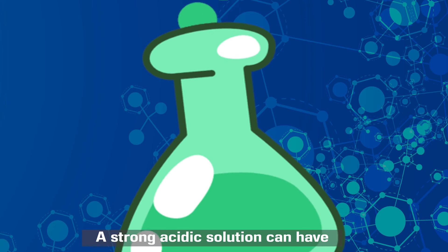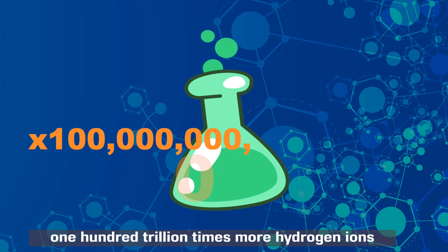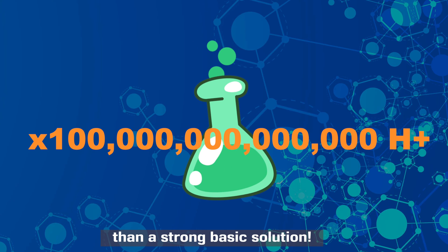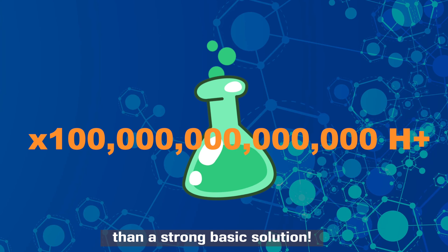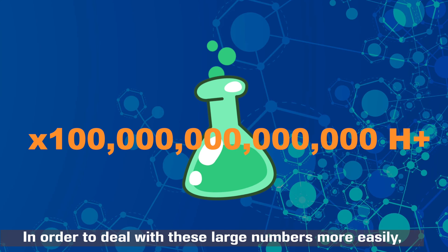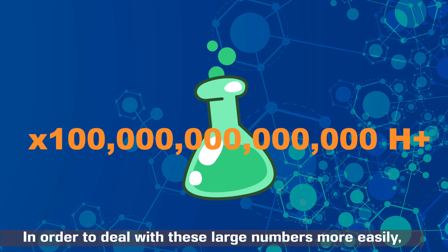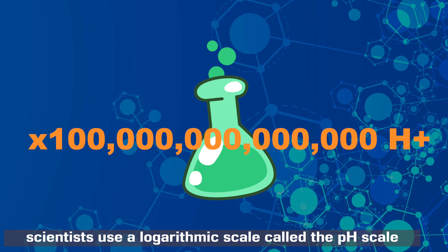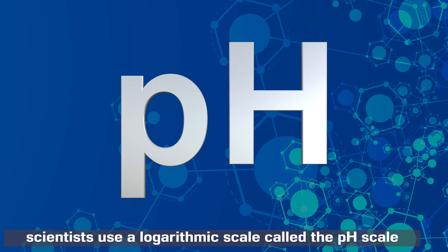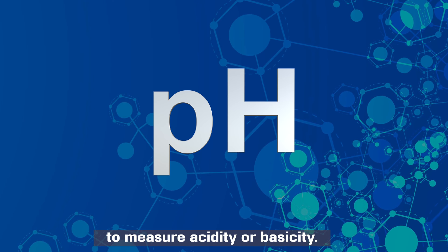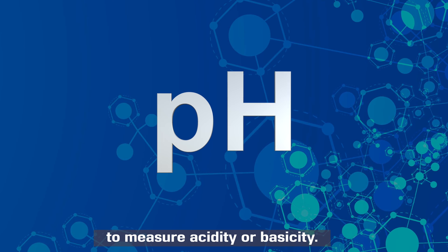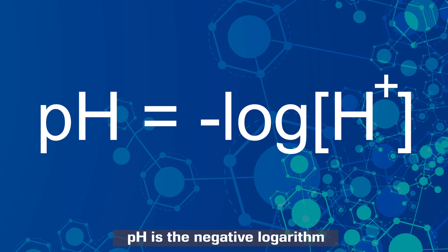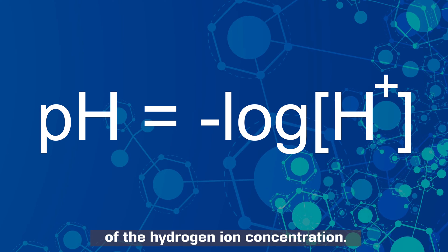A strong acidic solution can have 100 trillion times more hydrogen ions than a strong basic solution. In order to deal with these large numbers more easily, scientists use a logarithmic scale called the pH scale to measure acidity or basicity. pH is the negative logarithm of the hydrogen ion concentration.